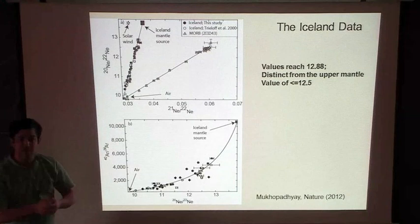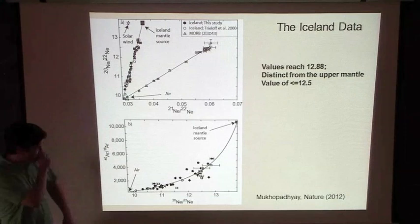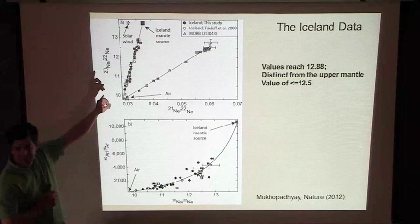There is a chance that the Iceland plume and the mid-ocean ridge basalt source actually have a slightly different neon-20 to -22 ratio. I want to focus more on the argon and xenon isotope ratios and some of the elemental ratios.